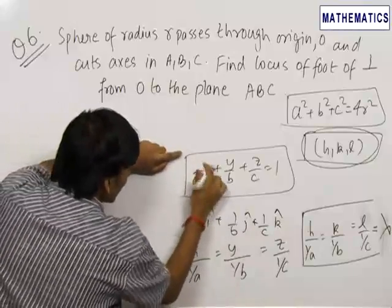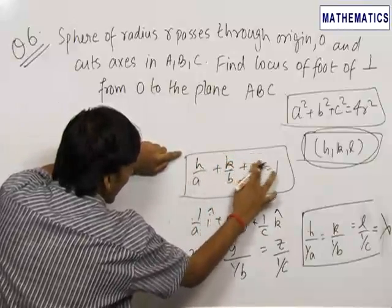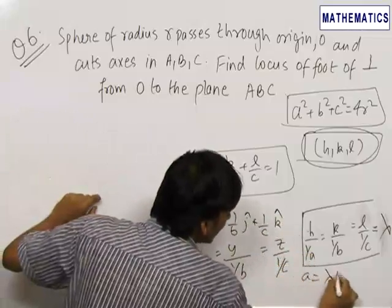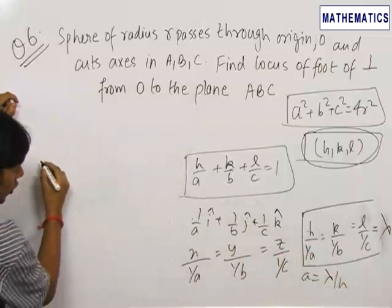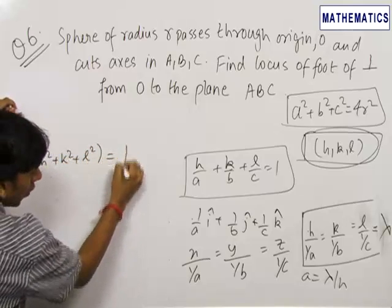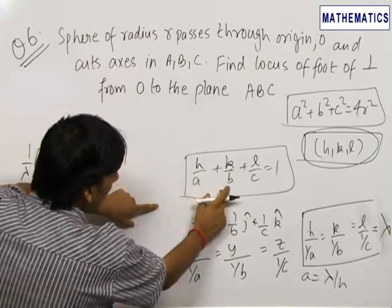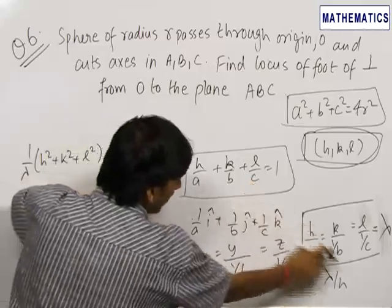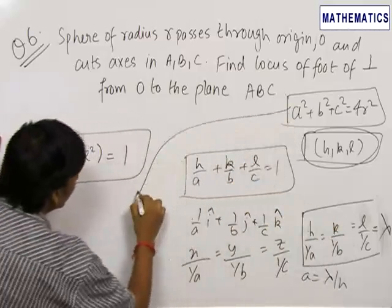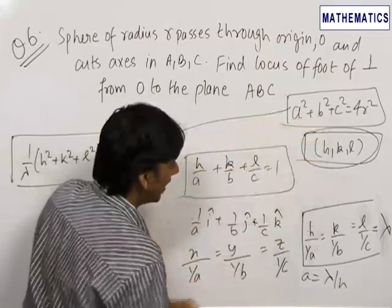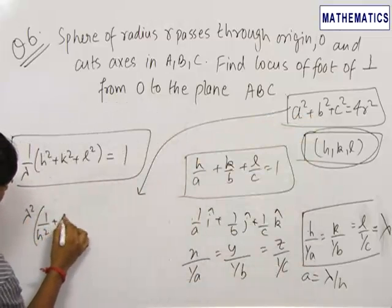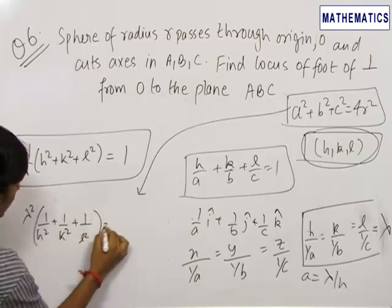Since (H, K, L) lies on the plane, we replace x by H, y by K, and z by L. We need to eliminate A, B and C. From the ratio equations, A = λ/H, B = λ/K, and C = λ/L. Substituting these into the plane equation gives (1/λ)(H² + K² + L²) = 1. This is one relation. We still need to eliminate λ, so we substitute A, B and C in terms of λ into A² + B² + C² = 4R², giving λ²(1/H² + 1/K² + 1/L²) = 4R².